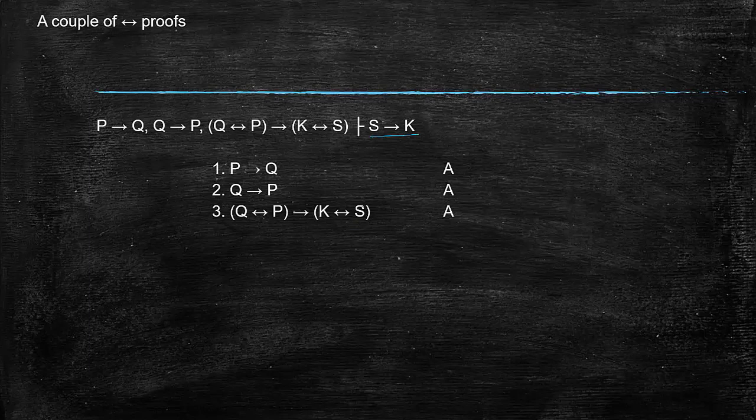So reverse engineering this a little bit, we see here that we have K if and only if S. And if we could get K if and only if S, we could use the biconditional elimination to get if S then K. So that just means we want Q if and only if P. But of course, that lies right here with if P then Q and if Q then P.